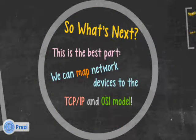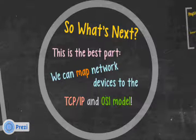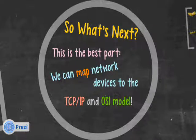We can map network devices to the TCP/IP and OSI model. Devices are made this way, and we can map them right to the TCP/IP and OSI model.